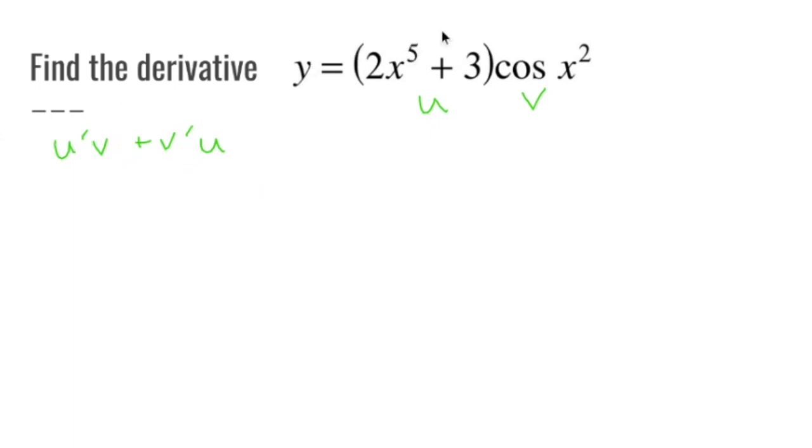So let's set that all up. So this is regular u, this is regular v. u prime is going to be drop down the 5, 10x to the 4th plus nothing. v prime is going to involve chain rule.